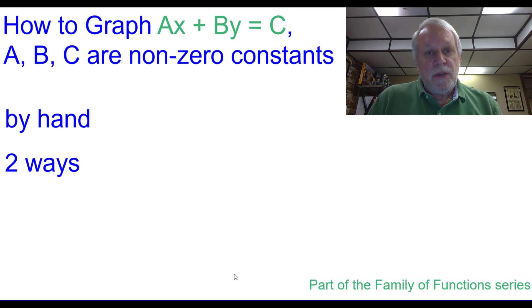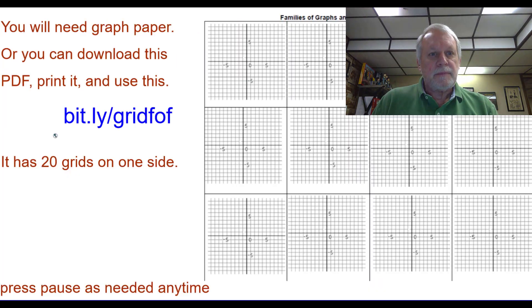How to graph equations of the form A times X plus B times Y equals C, where A, B and C are non-zero constants by hand, two different ways. This is part of the Family of Functions series. You will need graph paper or you can download this PDF and print it. Press pause as needed any time during this video.